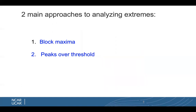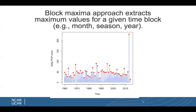There are two main approaches to analyzing extremes. One is to use block maxima, and two is to use peaks over threshold. The block maxima approach extracts maximum values for a given time block — for example, from every month, every season, or every year.